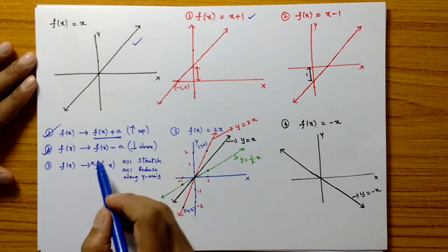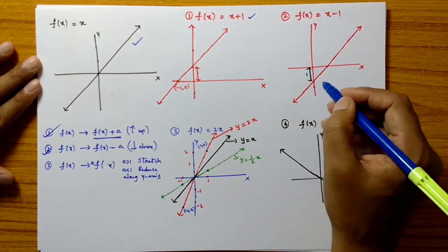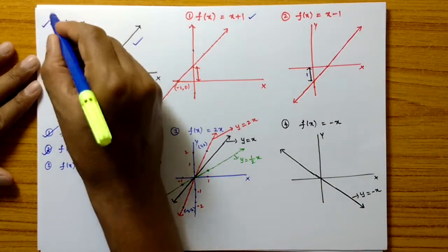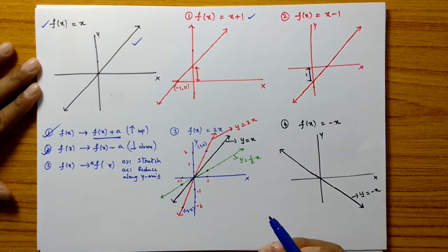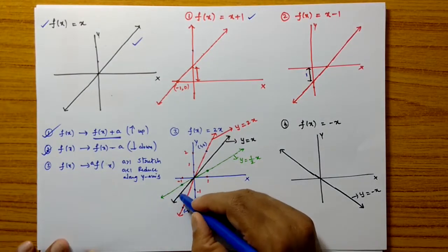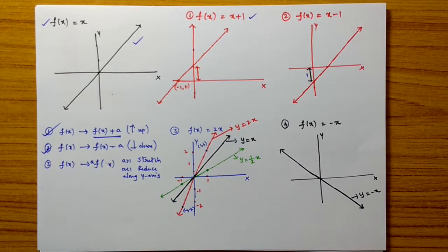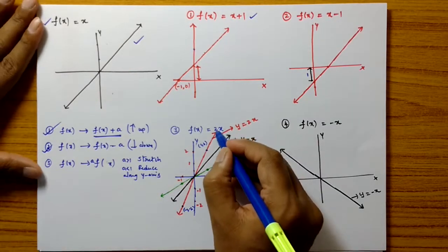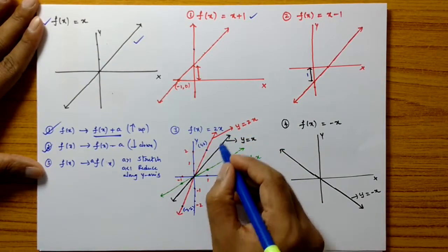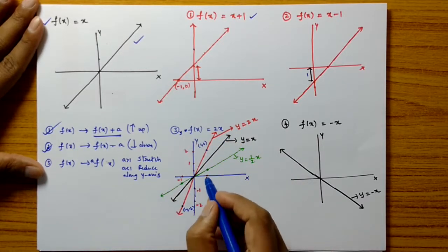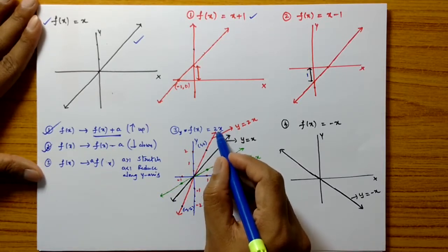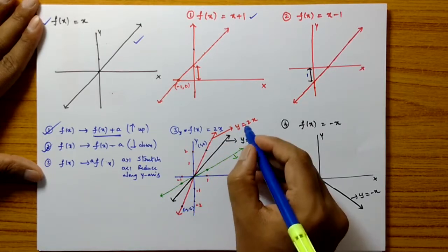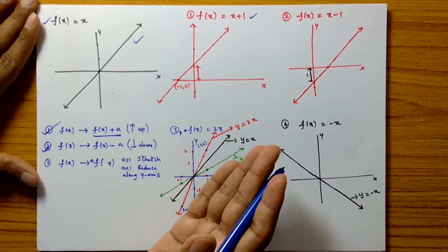Now, when a function f of x is multiplied by a constant a — taking a equals 2, for example — we get 2x. When x equals 1, y equals 2; when x equals minus 1, y equals minus 2. You can observe that the graph is stretched 2 units along the y-axis. When a is greater than 1, the graph stretches along the y-axis. When a equals 1/2, which is less than 1, the graph shrinks along the y-axis.